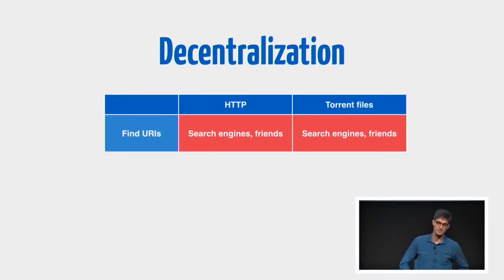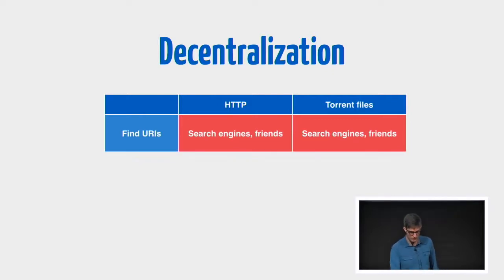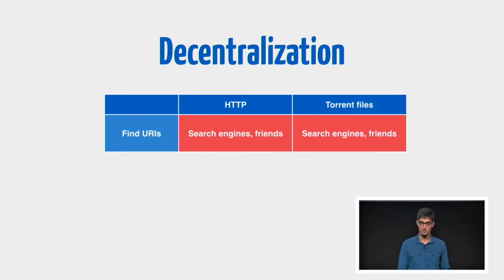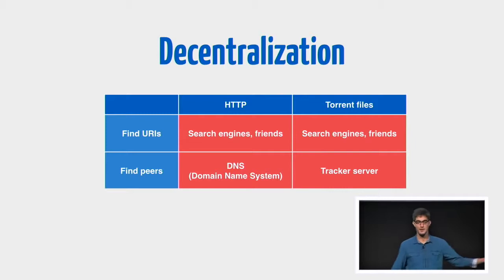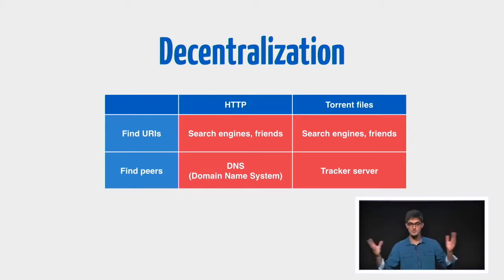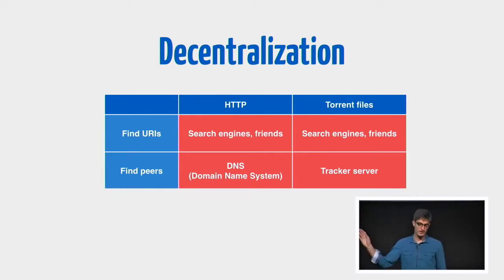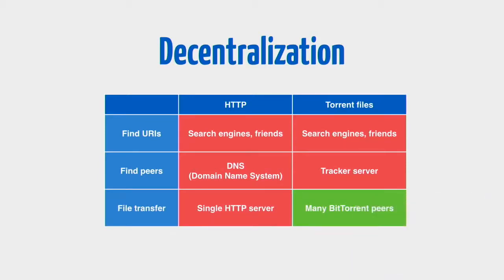This tracker approach is a point of centralization, so let's compare BitTorrent to HTTP. With HTTP, you find URLs through central means — you go to a search engine, Google, or your friend emails you a link. Same thing with torrents — you go to a search engine, your friend emails you a torrent file. When it comes to finding peers, with HTTP you're finding the IP address of the server using the domain name system, which is distributed but not decentralized — not robust against censorship. With torrent files, we're going to a tracker server. However, we do get decentralized file transfer, getting the data from many peers, which is pretty awesome.